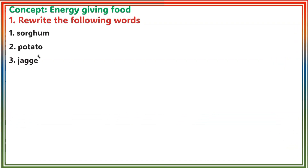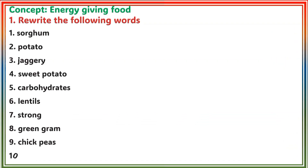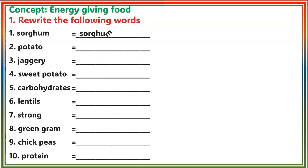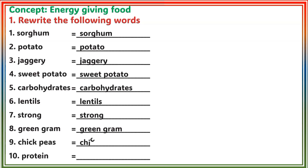Worksheet 10 Concept: Energy Giving Food, Section 1. Rewrite the following words: Sorghum, potato, jaggery, sweet potato, carbohydrates, lentils, green gram, chickpeas, protein.